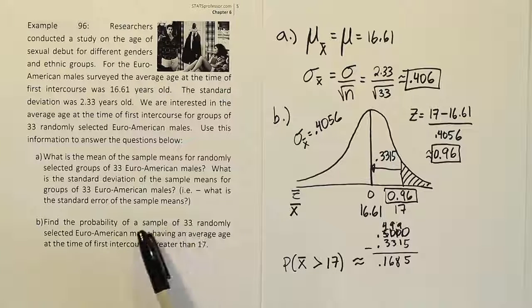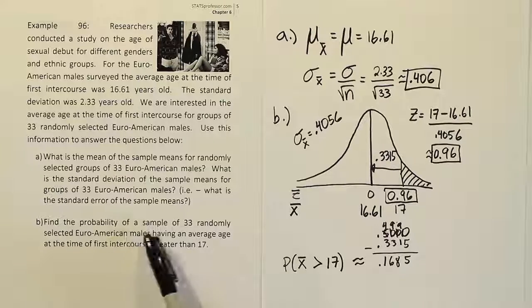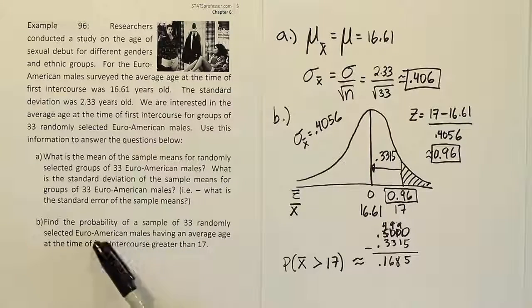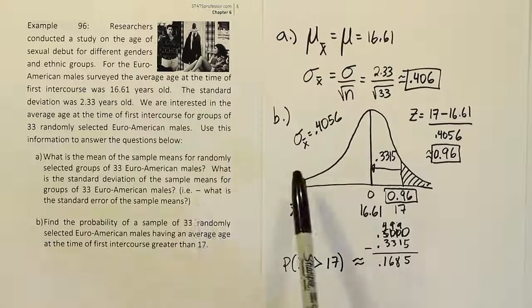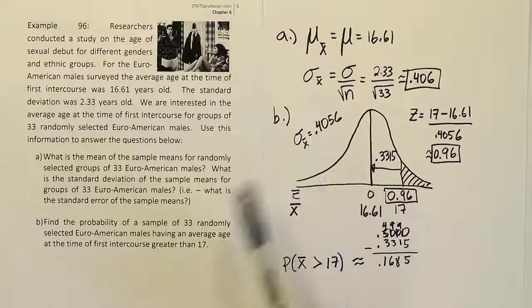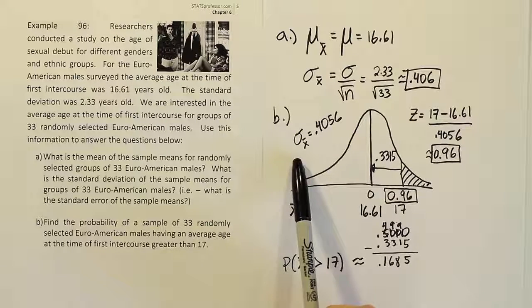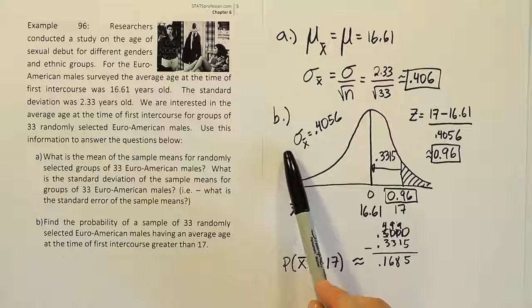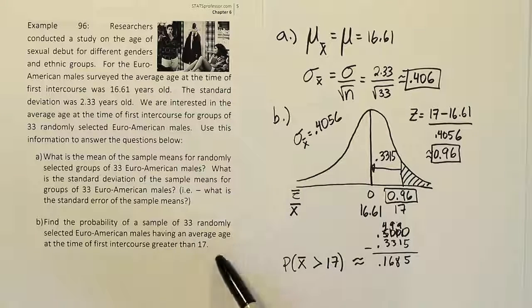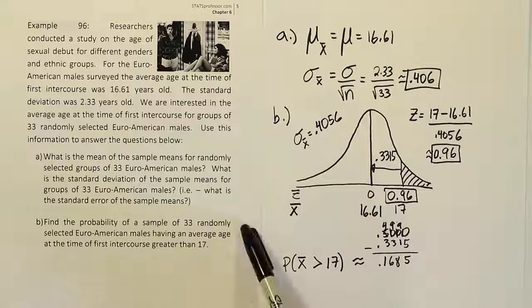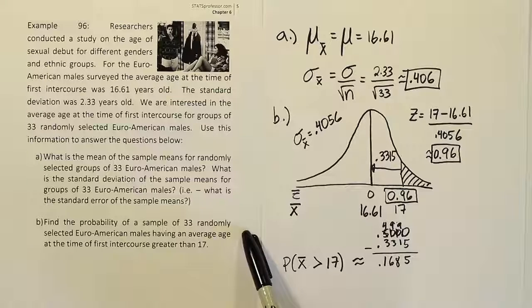In the previous problems, it always said 1 randomly selected. Now we're talking about 33 randomly selected. That sample size means we must adjust our standard deviation. Our next example is going to do a side-by-side comparison of what we did in the past and what we're doing now with the central limit theorem so you can see what the differences are and so that you can properly distinguish on the exam which method you should be applying.